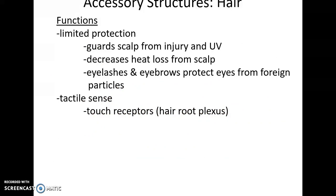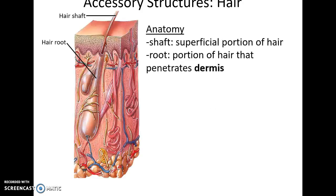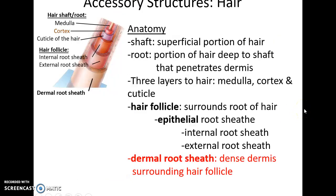Hair is an accessory structure with limited protection: it guards the scalp from some injury and UV, decreases a little heat loss, and eyelashes and eyebrows protect the eyes. Hair also has its own touch receptors — the hair root plexus — that allow us to detect when our hair has been moved. The hair has a shaft (the superficial portion we can see) and a root embedded in the skin that penetrates into the dermis.